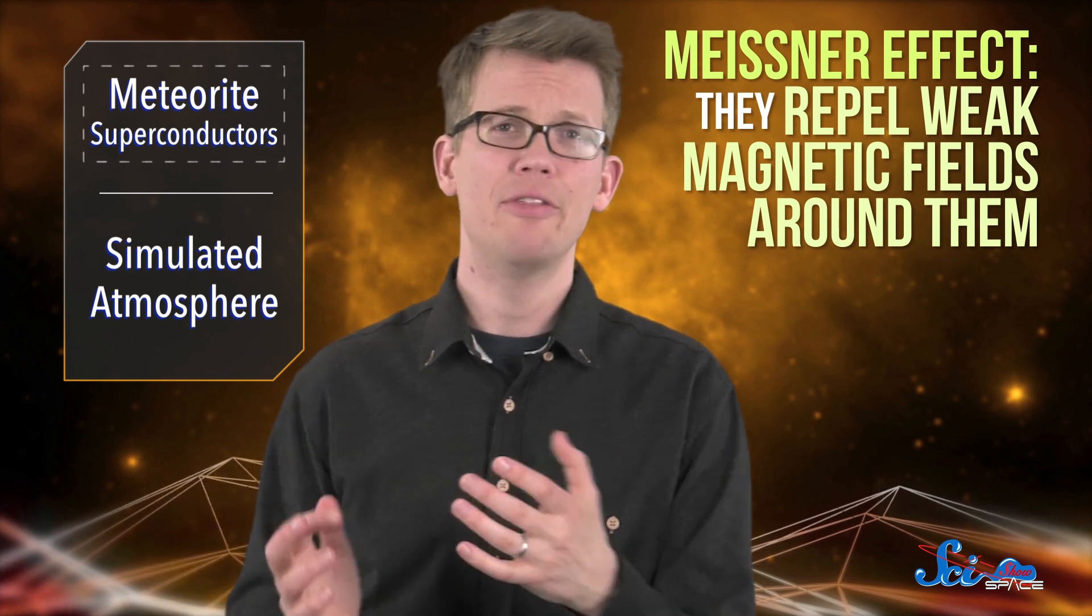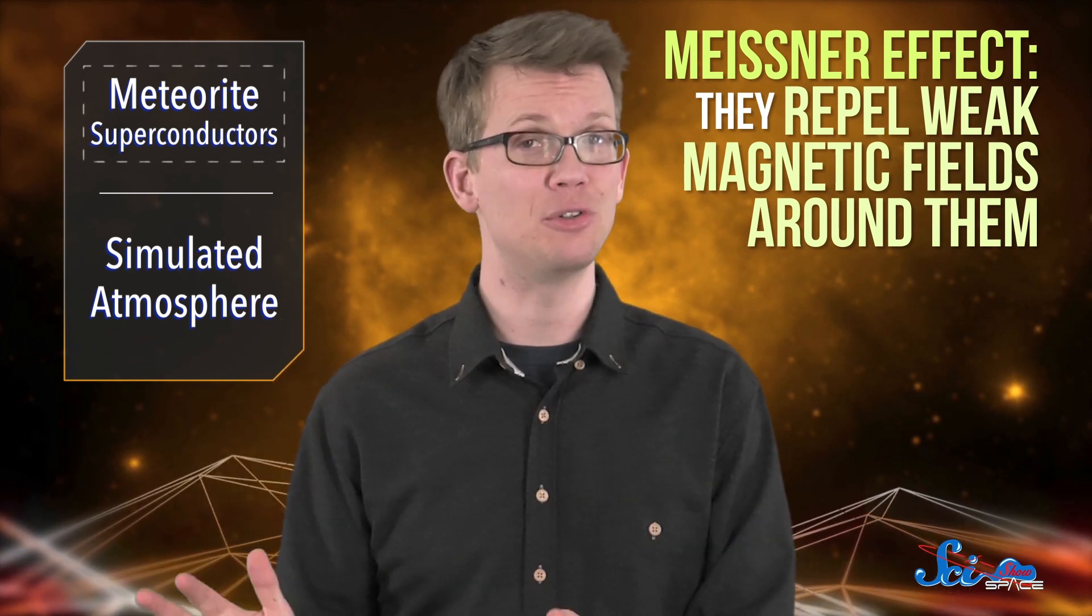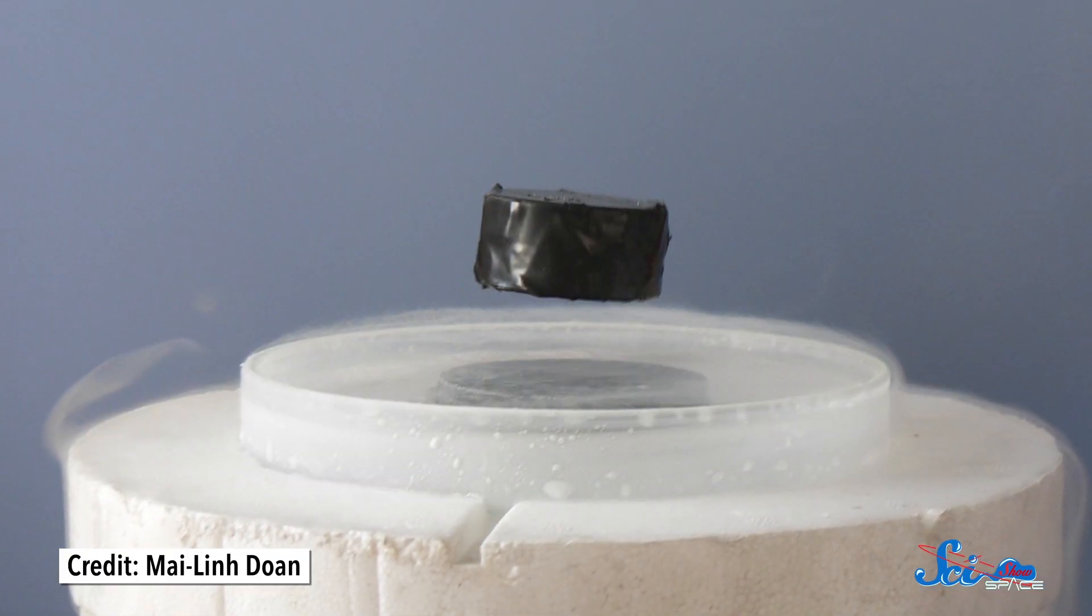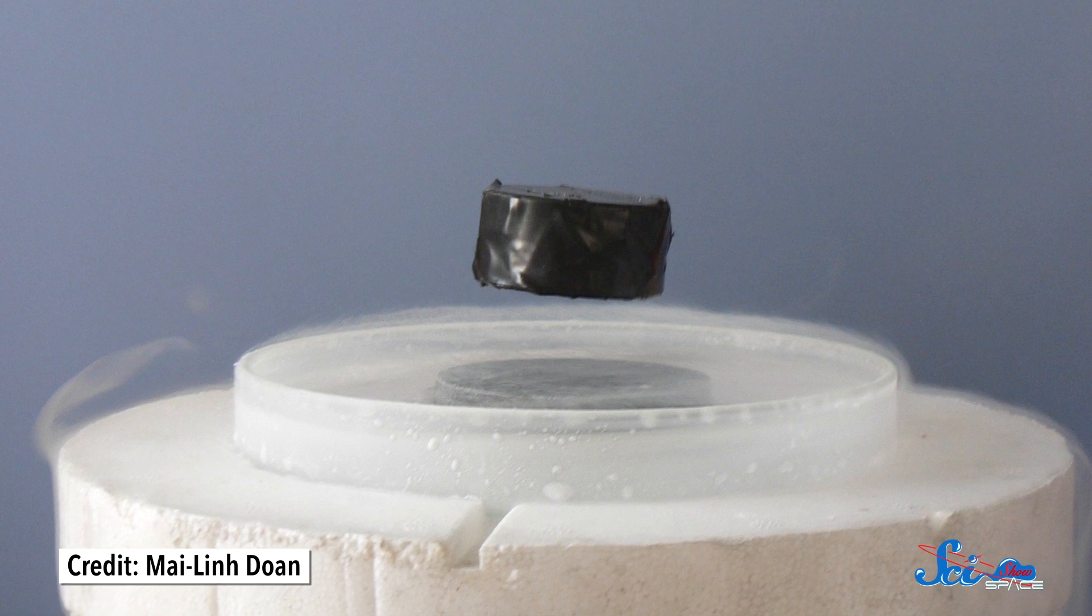At these temperatures, the atom's electrons start pairing up, which allows them to flow extra smoothly, with basically no energy loss. As a bonus, superconductors also have a property called the Meissner Effect. They repel weak magnetic fields around them. This is one reason why, if you put a superconductor in a magnetic field, it'll float.